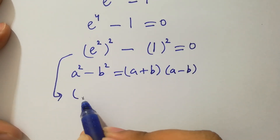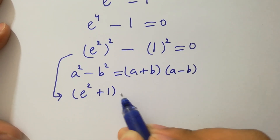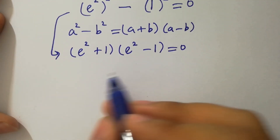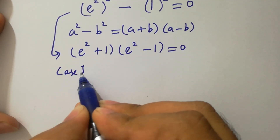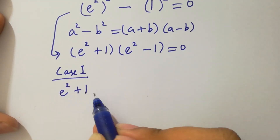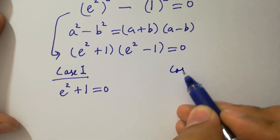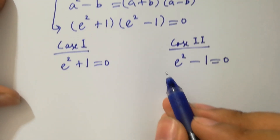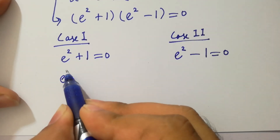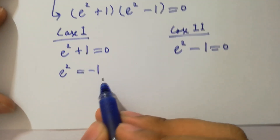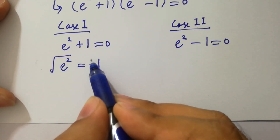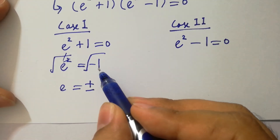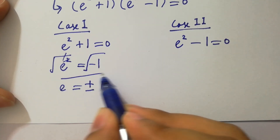It will be (e squared plus 1)(e squared minus 1) equals 0. So we have two cases. Case 1: e squared plus 1 equals 0, and Case 2: e squared minus 1 equals 0. From Case 1, e squared equals minus 1. Taking the square root on both sides, e equals plus or minus the square root of minus 1, which is i.